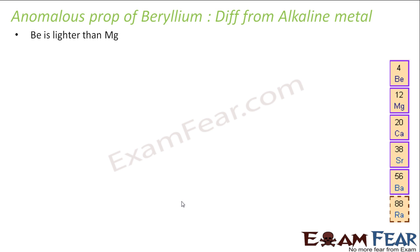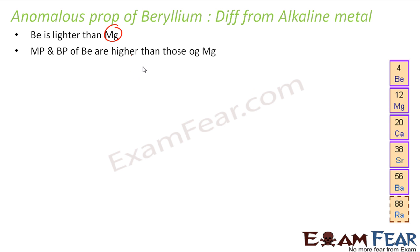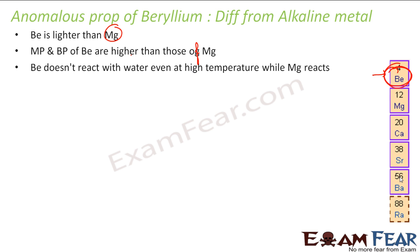The first difference is that beryllium is much lighter than magnesium — very very light compared to magnesium. The melting point and boiling point of beryllium are also very high compared to magnesium and other alkaline earth metals, due to the small size of beryllium.